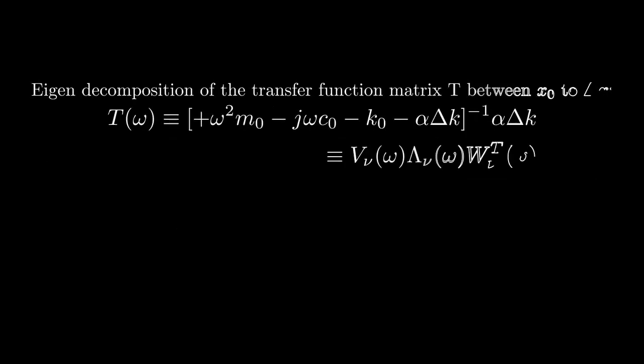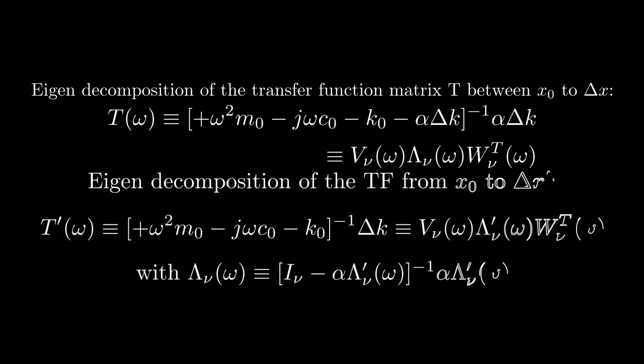In the frequency domain, we may relate x0 and delta x with the transfer function matrix T, with the corresponding eigendecomposition. x0 and delta x prime may be related by T prime, the modally equivalent perturbed system, with its own respective eigendecomposition, which shares the same eigenvectors as T, however varies in eigenvalue.